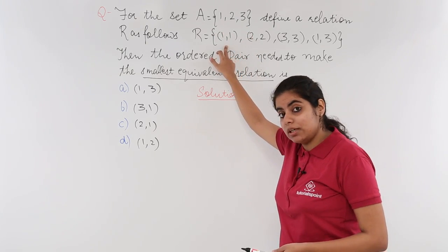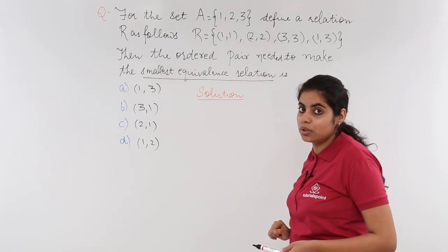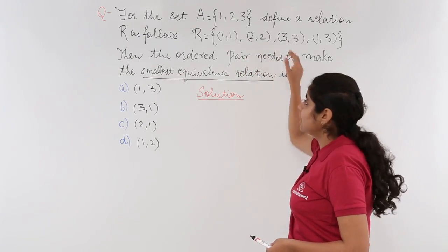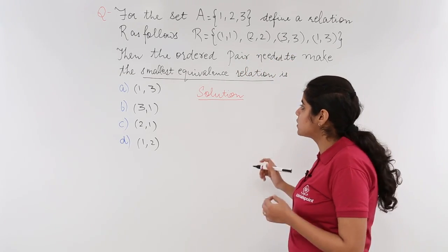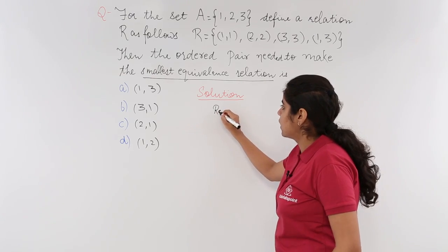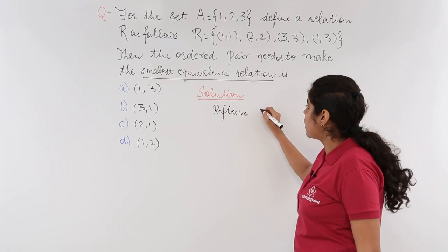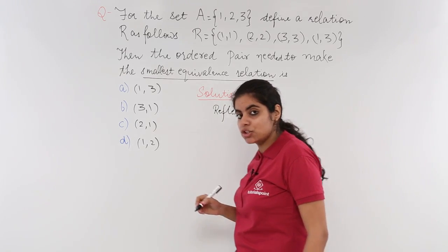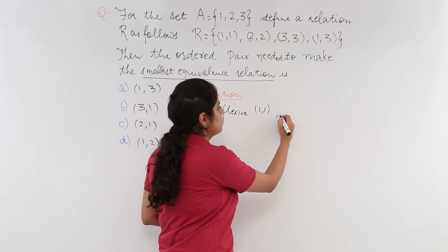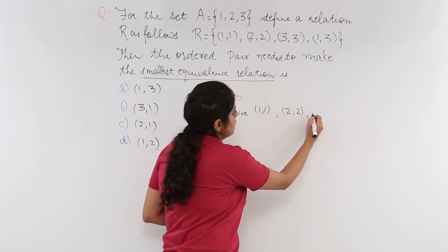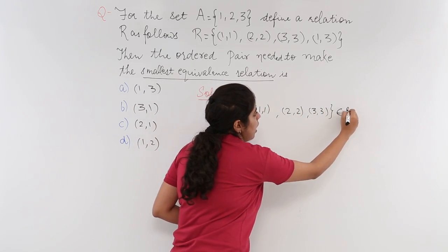Yes, 1 is related to 1. Is 2 related to 2? Yes, 2 is also related to 2. Is 3 related to 3? Yes, 3 is also related to 3. Why reflexive? Because (1,1) is present in the relation, (2,2) is also present in the relation, and (3,3) is also present in the relation. These all belong to R.